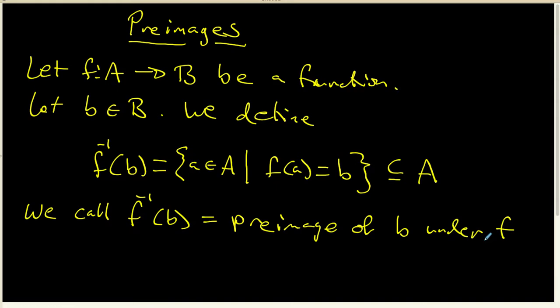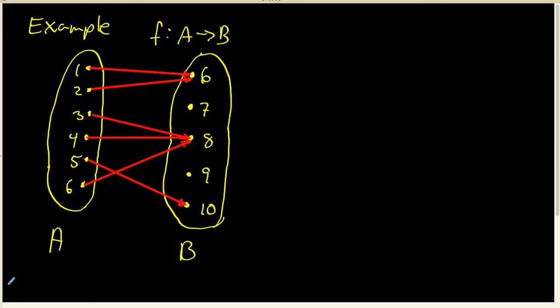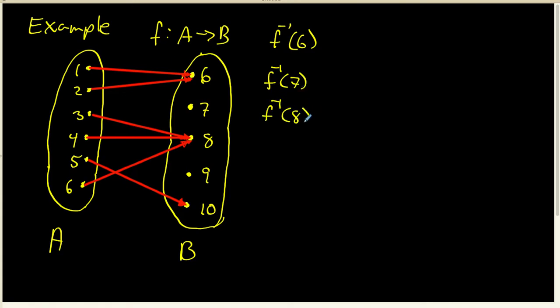It's important to realize that pre-images are sets, not necessarily individual elements. Here is a function from a set A to a set B. This function is certainly not one-to-one, and it's also not onto. What we want to do is calculate the pre-image of each of the elements inside set B.